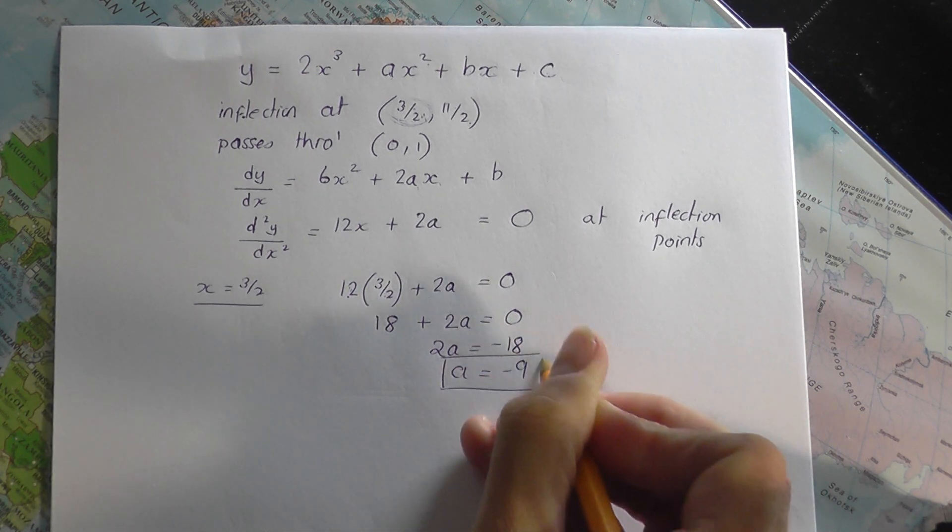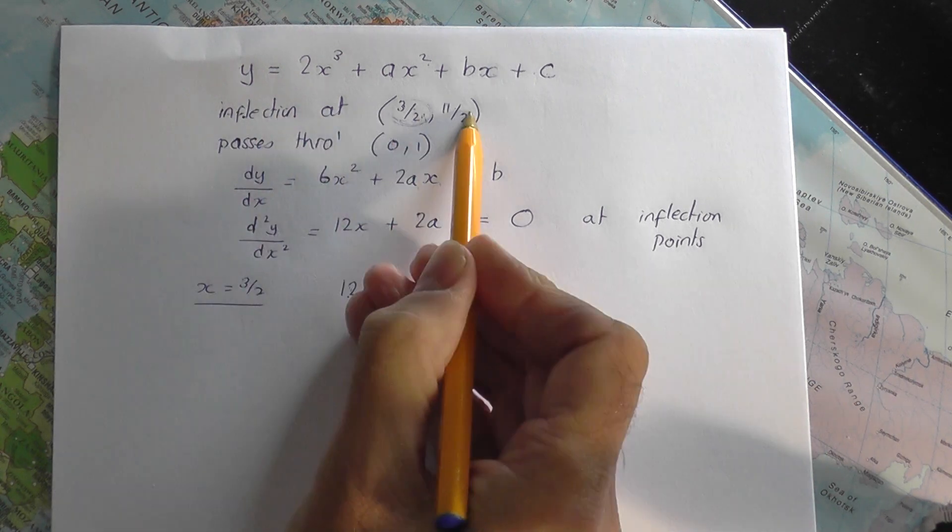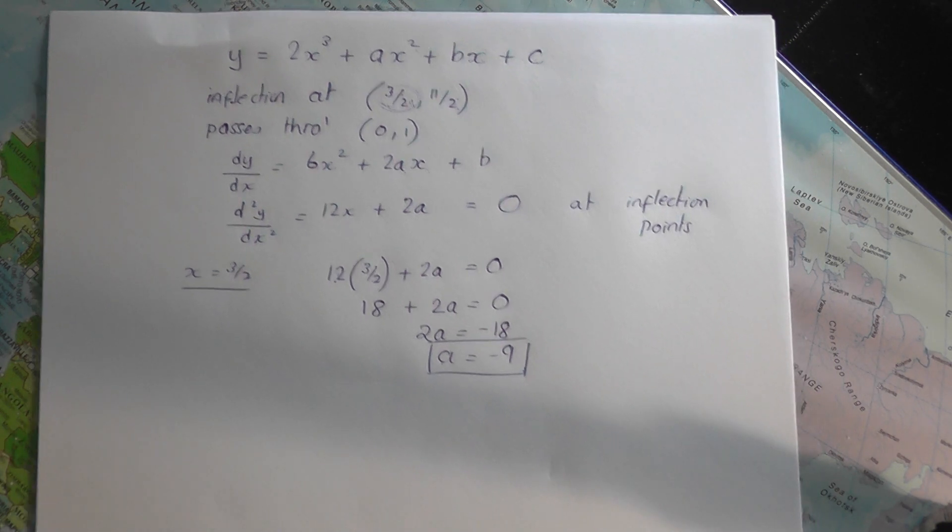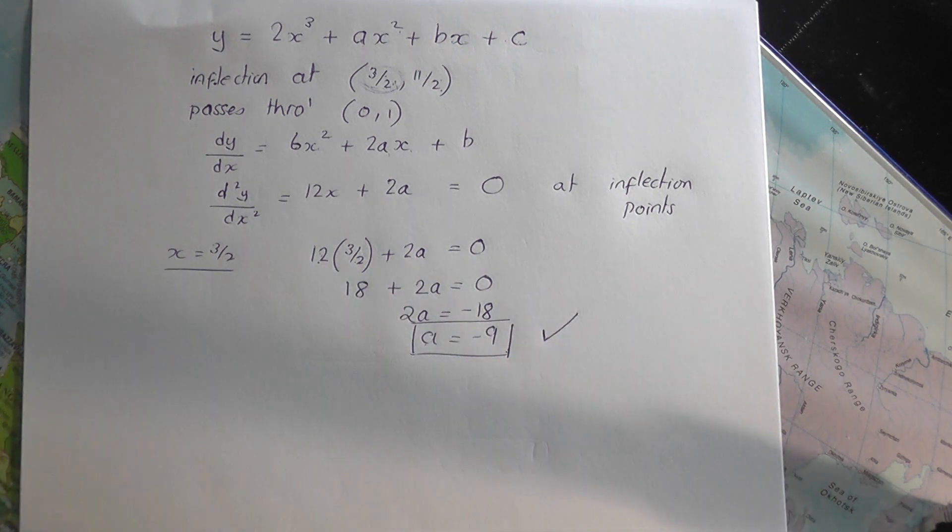So, the first bit of information, which was taking the inflection point, actually gives rise to the first answer, a equals minus 9. So, certainly not a problem with having to use simultaneous equations or whatever. a falls straight out. Happy with that.